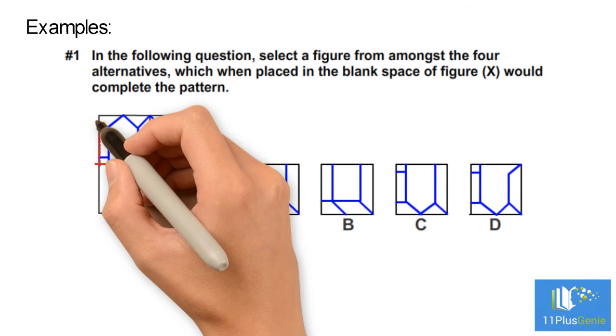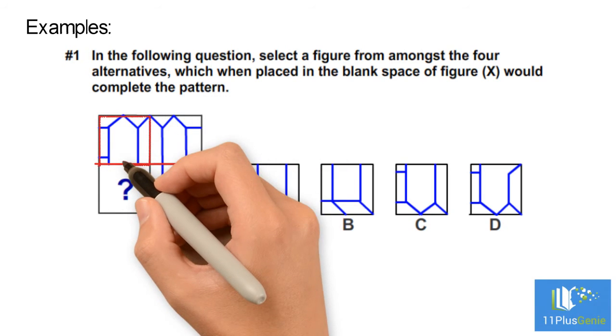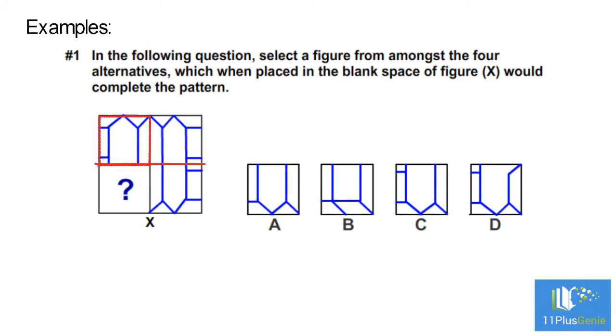The part that should replace the question mark must be a water image of this block. Remember, a water image is a vertical reflection. The correct answer is C.